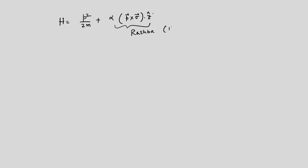The full single-particle Rashba Hamiltonian is H = p²/2m + α(p × σ)·ẑ, which expands to H = p²/2m + α(σ_x p_y − σ_y p_x). Here σ_x couples to the y-component of momentum and σ_y couples to the x-component.